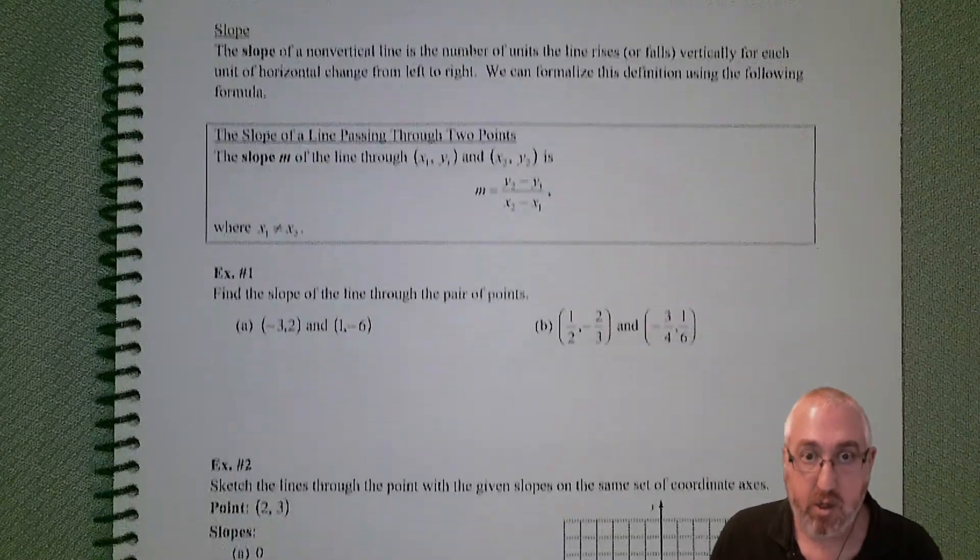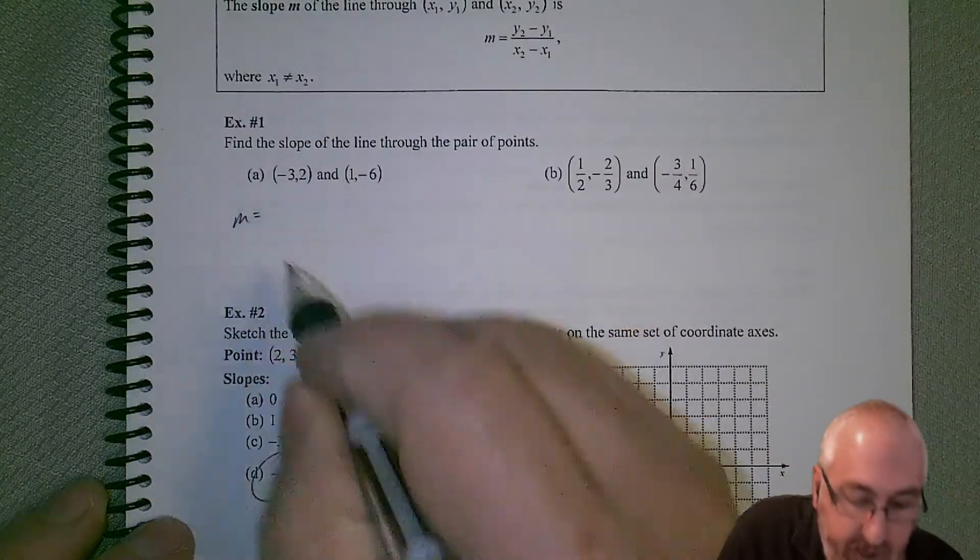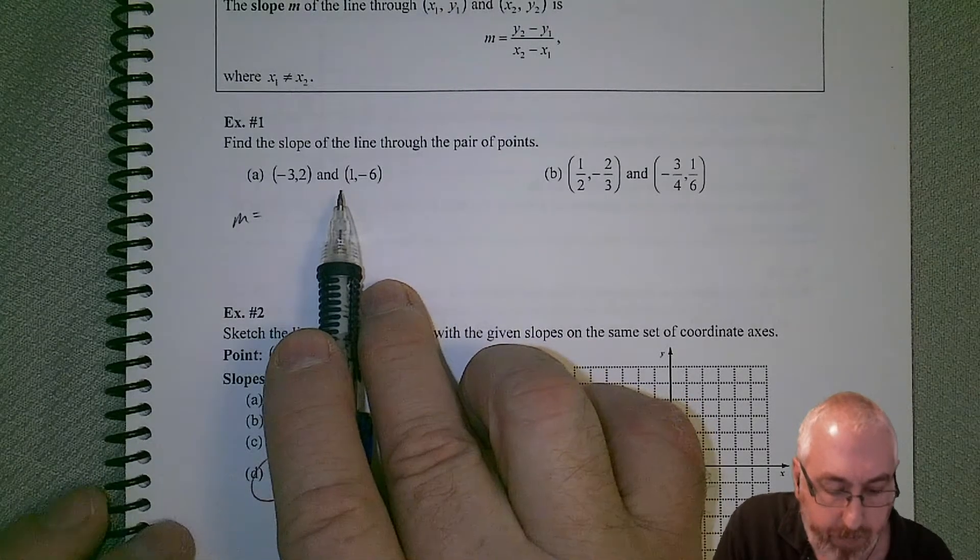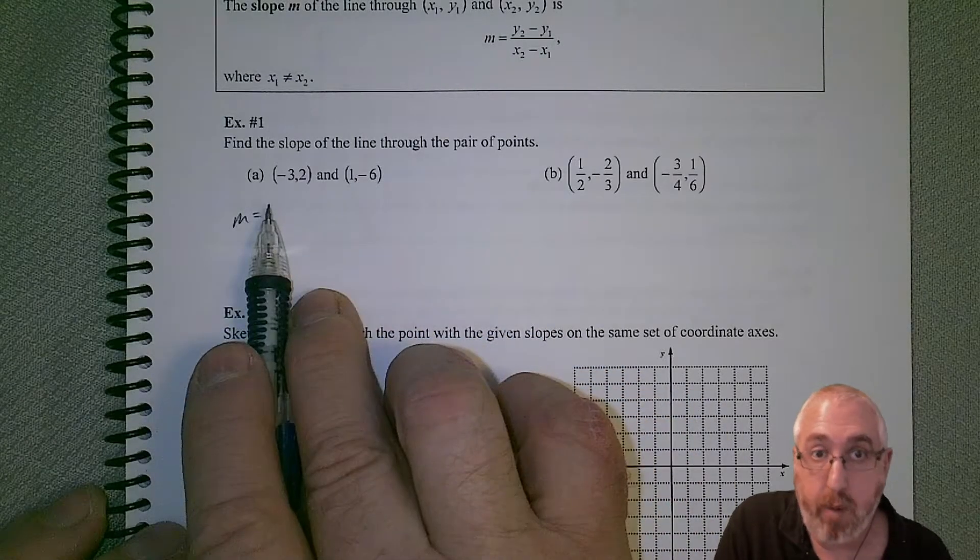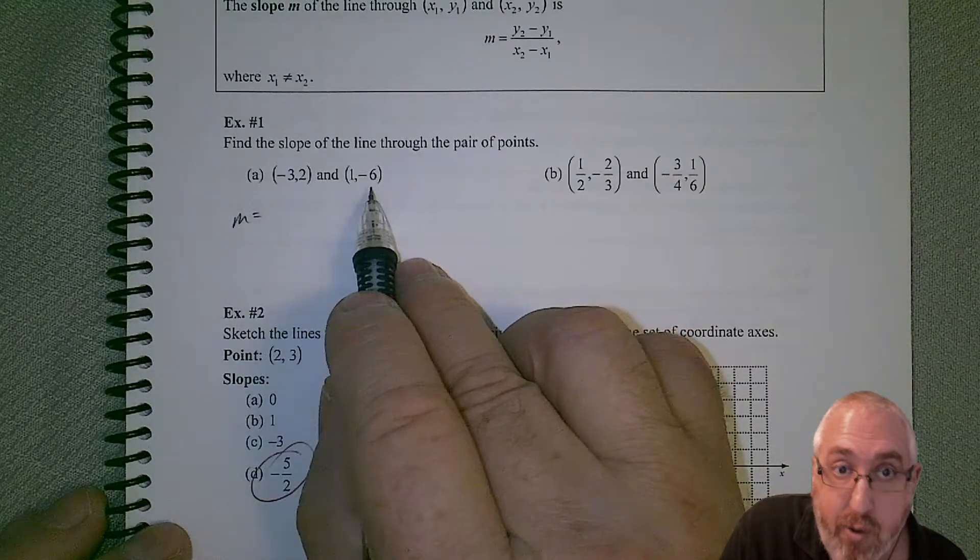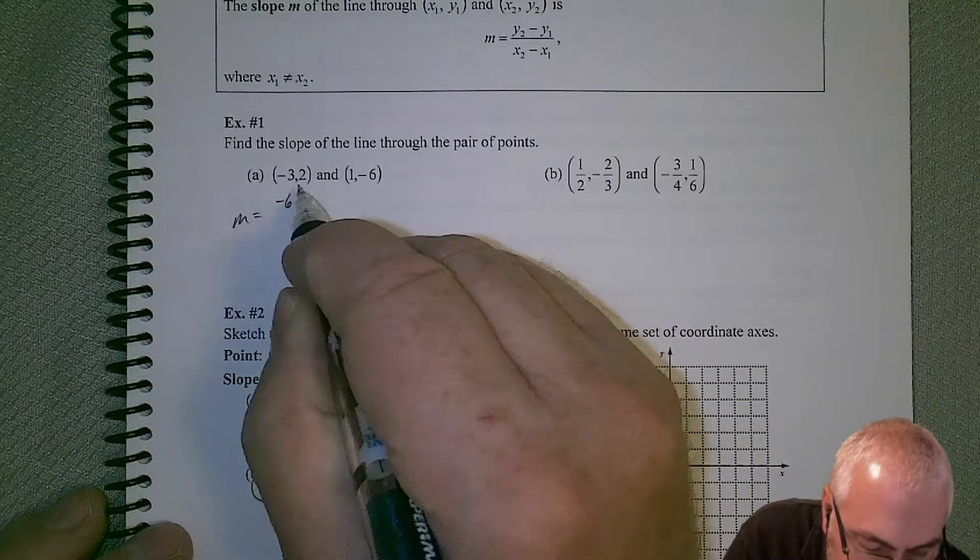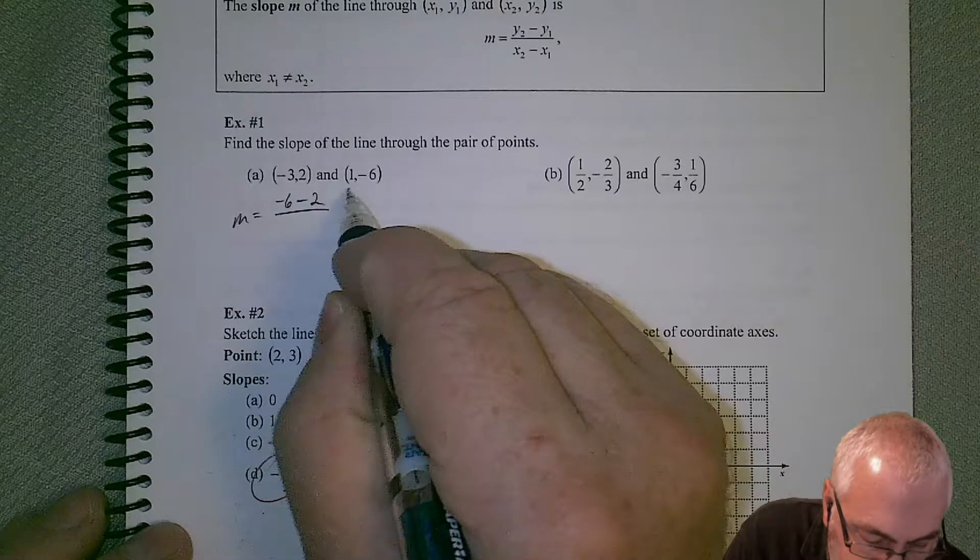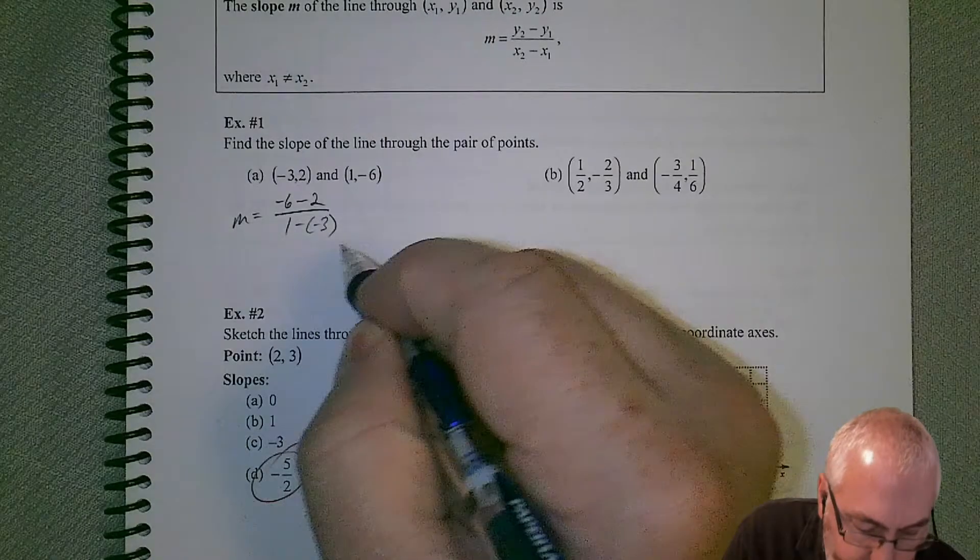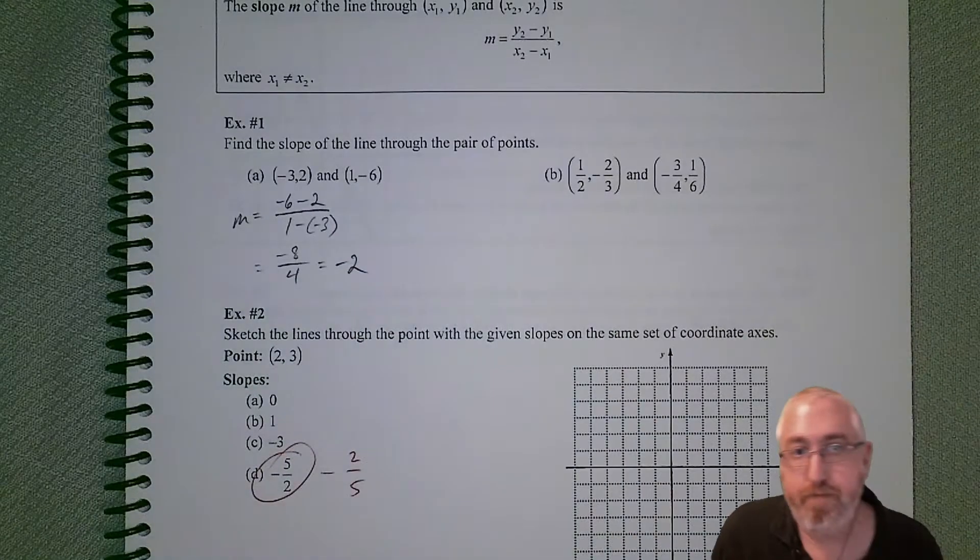Let's quickly do a couple of slope problems here. It doesn't matter which one we call x1, x2, y1, y2, as long as you're just consistent and going from one point to the next and back. If we say this is our x2 and y2, we can use our y2, which is negative 6, minus 2, all over 1, minus a negative 3. If we do the math, negative 8 over 4, which equals negative 2. Very quick.